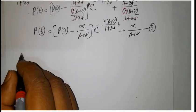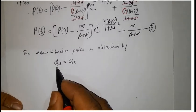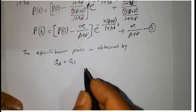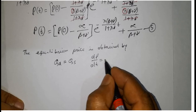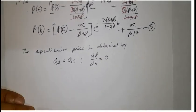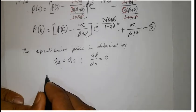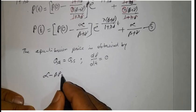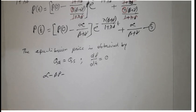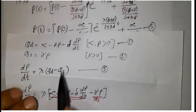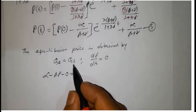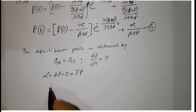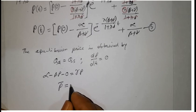The equilibrium price is obtained by equating demand and supply, that is Q_D equals Q_S, where price is constant. So dP/dt equals 0. Substituting the demand and supply equations, since dP/dt equals 0, that term drops out and we solve alpha minus beta·P equals gamma·P. After solving, we get P-bar equal to alpha divided by (beta plus gamma).